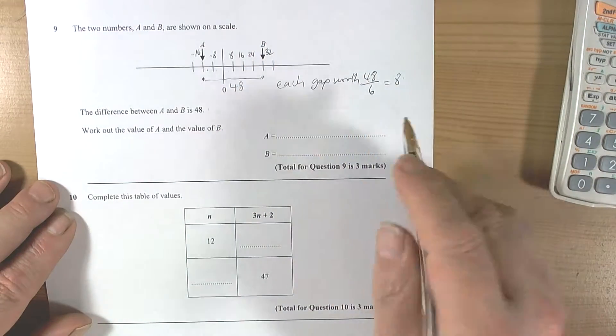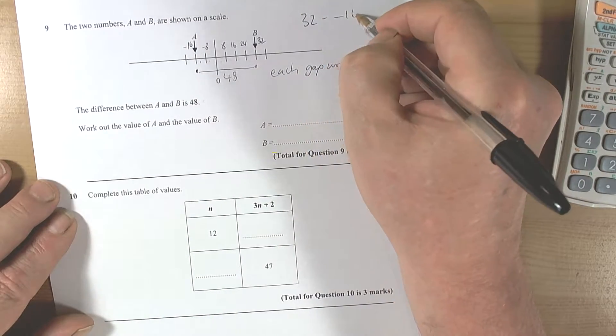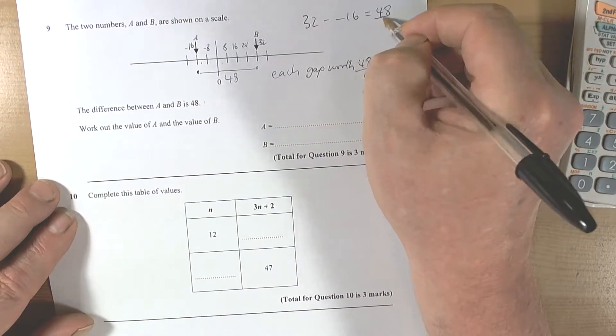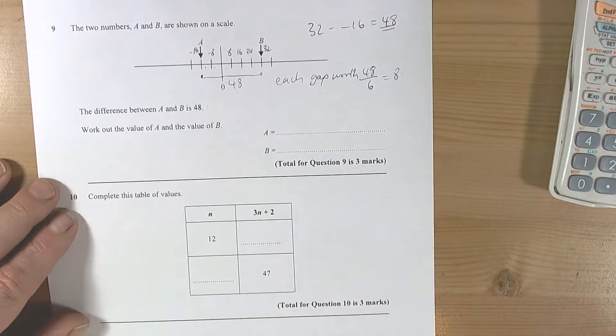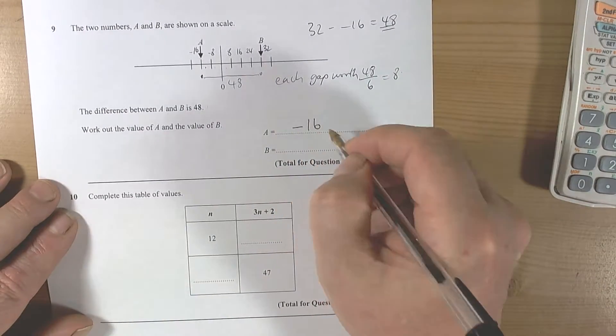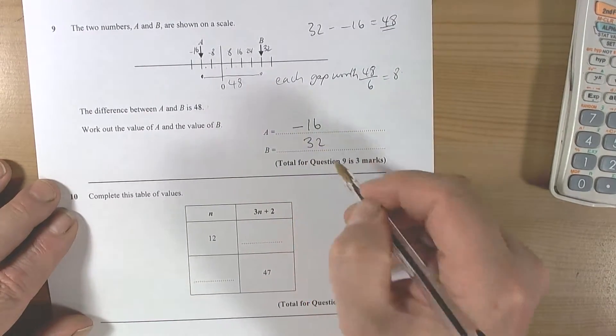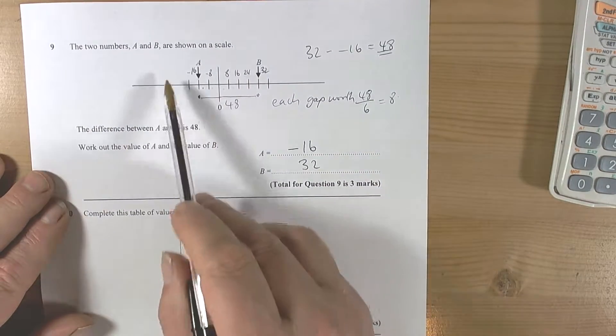Okay, and 32 take away negative 16 equals 48. So again, it's just a check, isn't it? A is worth negative 16 and b is worth 32. So the key with this kind of question is to think what scale means.